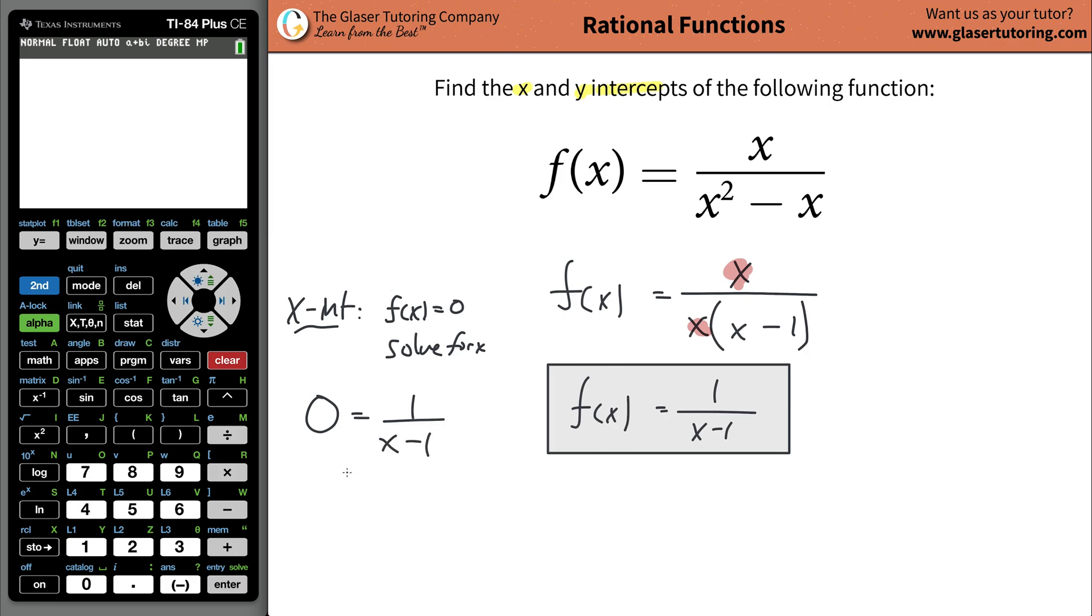And what we're going to realize is that we're going to have 0 times x minus 1 equaling 1. And we're going to have kind of a strange answer here, right? Because we're going to get 0 equal 1. What this basically tells us is that there is no value of x that's going to make this thing true. There is no value of x. So what this means is that there is no x intercept. There is none.